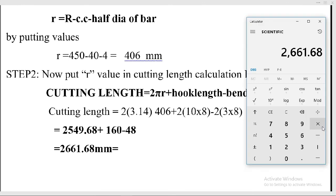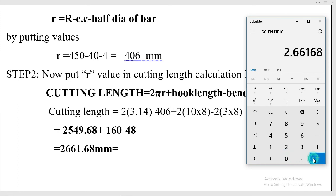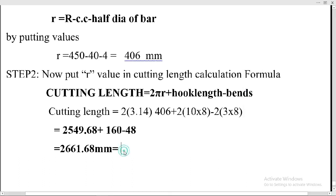To convert the cutting length into meters, divide by 1000. So 2661.68 ÷ 1000 = 2.66 meters. That is the cutting length required for one circular stirrup.